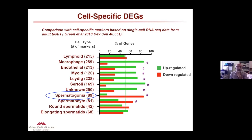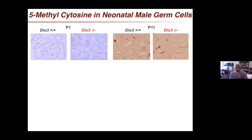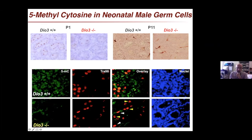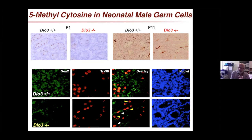Analyzing these neonatal testes by immunohistochemistry for cytosine methylation, we found it is much reduced both shortly after birth and in late neonatal life compared to wild types, and some of this decrease in methylation is already occurring in spermatogonia. In normal animals, methyl cytosine signal overlaps significantly with spermatogonia, but that overlap is reduced in the DIO3 knockout, which also shows an overall decrease in methyl cytosine signaling. This suggests DIO3 is present in spermatogonia at a critical position protecting the germline from the effects of excess thyroid hormone.